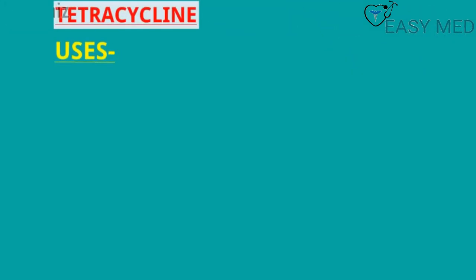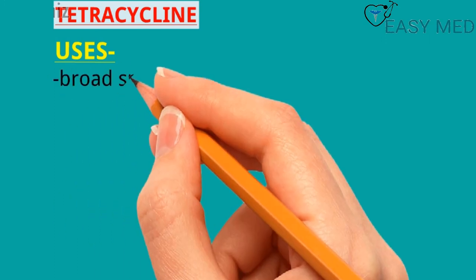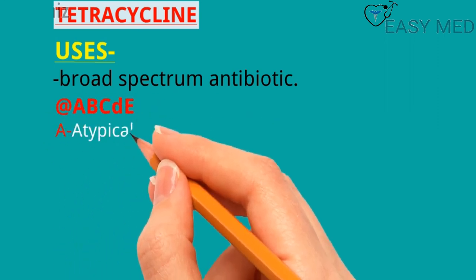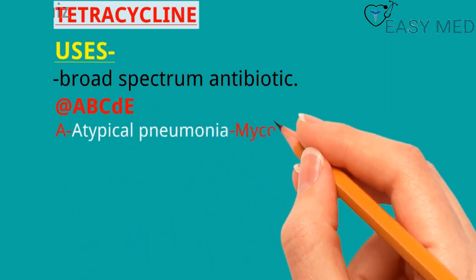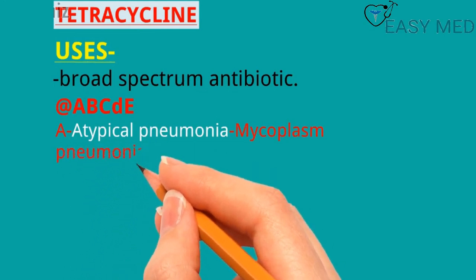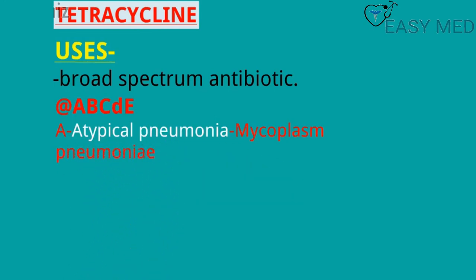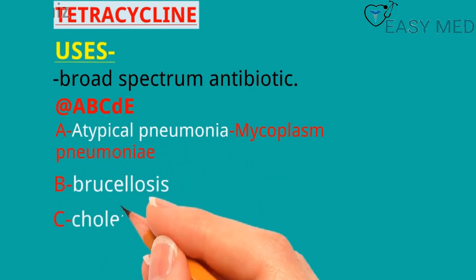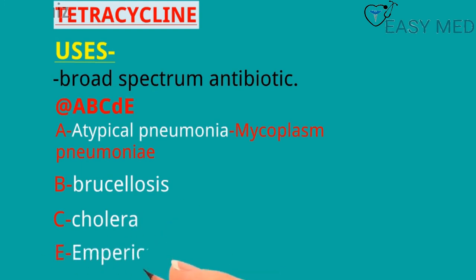Uses of tetracycline: tetracycline is a broad-spectrum antibiotic, so it is used in ABCDE — A for atypical pneumonia (pneumonia due to Mycoplasma pneumoniae), B for brucellosis, C for cholera, and E for empirical therapy.